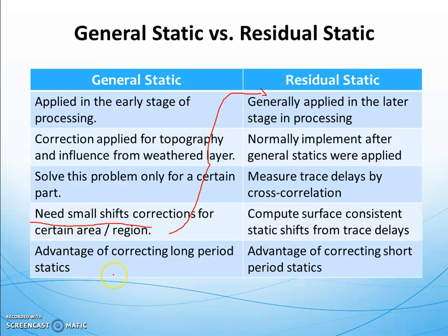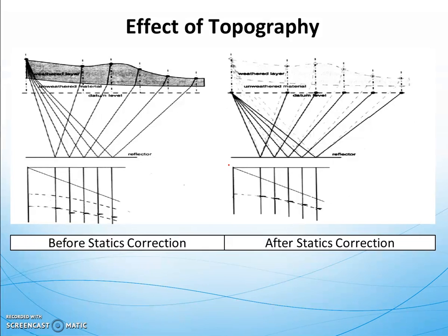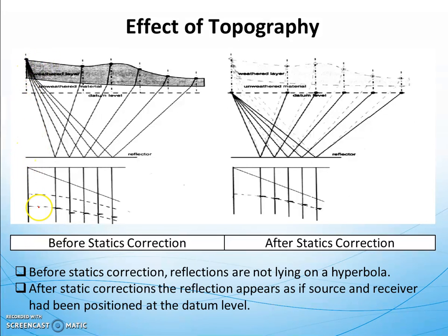Another advantage of general static is that it is able to correct for long-period statics. Residual static is applied in the later stage of processing, generally in the offset domain or the CDP domain. Residual static also computes the surface-consistent static shift and corrects short-period statics — those not corrected by the general static.